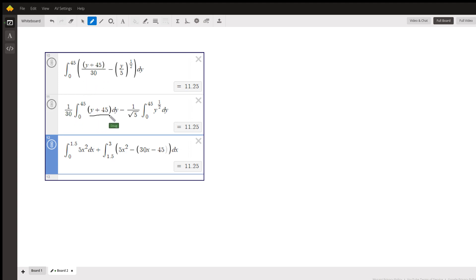Factoring out the 1 thirtieth, leaving y plus 45 as the integral, minus take the square root of 1 fifth out front, y over the square root of 5, and leaving y to the one half as the integral.